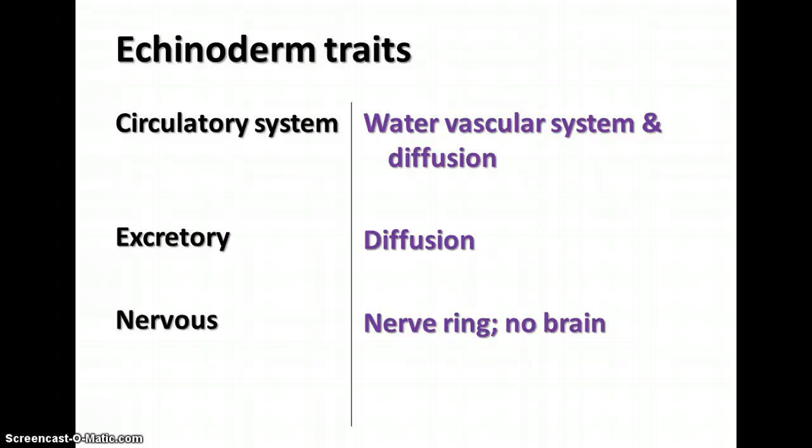Their excretion is taken care of by diffusion. They don't have blood in the circulatory system — it's strictly water — but it does allow for nutrients to be diffused around inside the body. In the nervous system, they don't have a brain, but they do have a nerve ring with radial nerves that run down each arm. All of the components of the circulatory and nervous systems run down each of the arms of the animal.